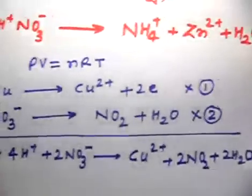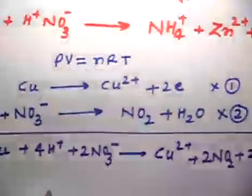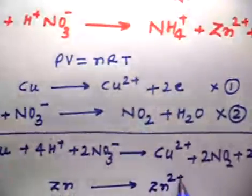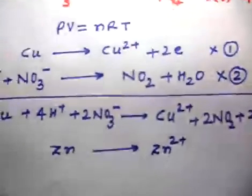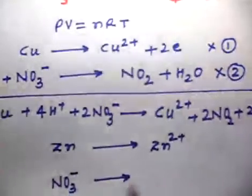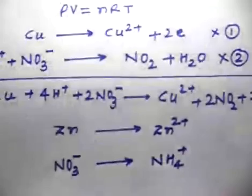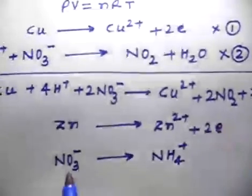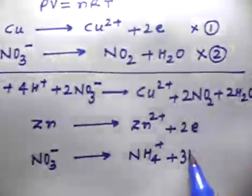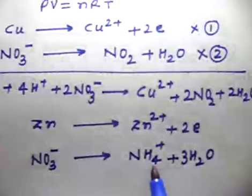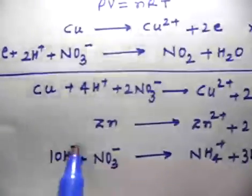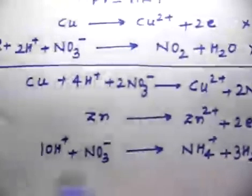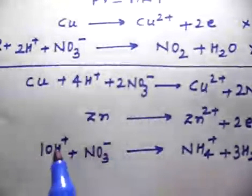For the zinc reaction, the two half-reactions are: Zn → Zn²⁺ (adding 2 electrons), and NO3⁻ → NH4⁺. For the NO3⁻/NH4⁺ half-reaction, I have 3 oxygen so I add 3H2O on the right. That gives 4 + 6 = 10 hydrogen, so I add 10H⁺ on the left.